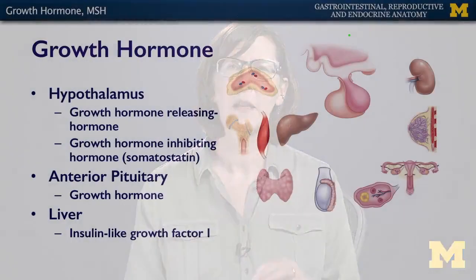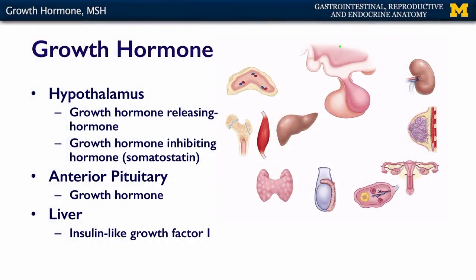Growth hormone is another hormone created under the influence of the hypothalamus in the anterior pituitary. The hypothalamus is going to secrete two factors: it will either secrete growth hormone releasing hormone, which comes into the anterior pituitary causing it to make growth hormone that acts on all kinds of tissues in the body, or it will release growth hormone inhibiting hormone, also known as somatostatin, which inhibits the release of growth hormone from the anterior pituitary.